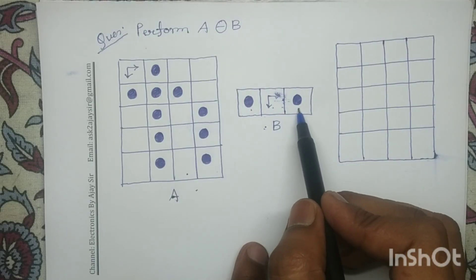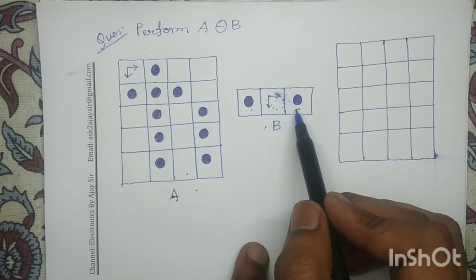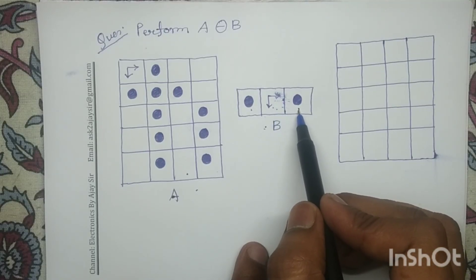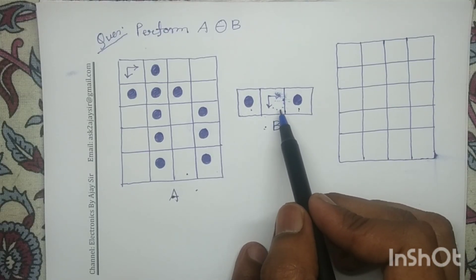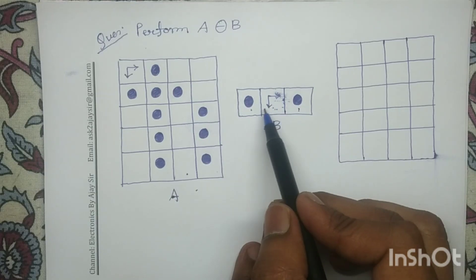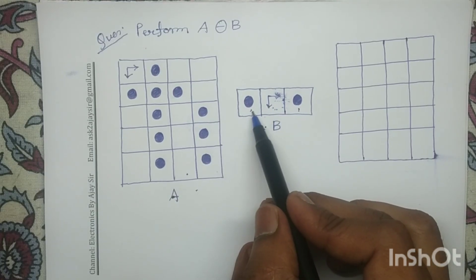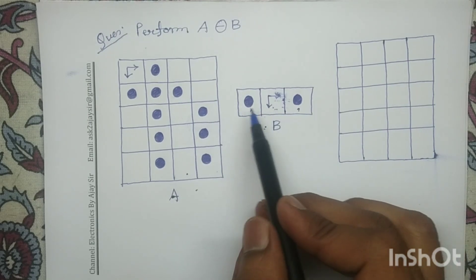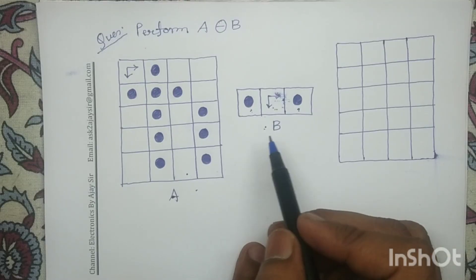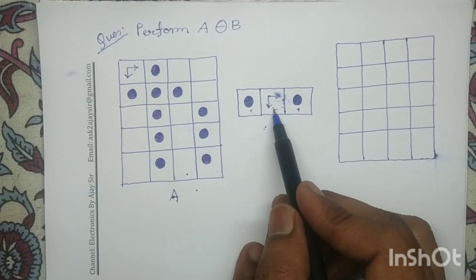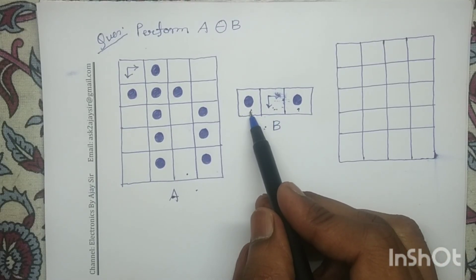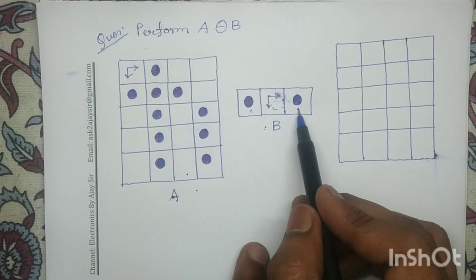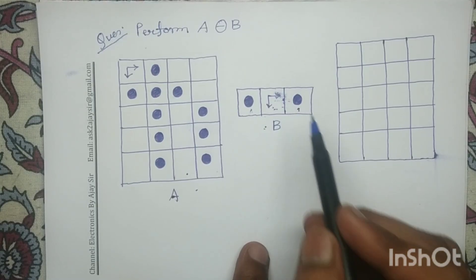Similarly, on the right side of the center of the structuring element, we also have object pixels. So in the input image, we have to determine those center pixels whose left side as well as right side consist of object pixels.